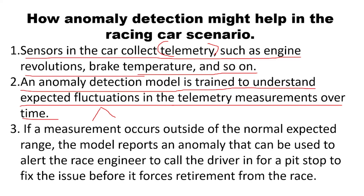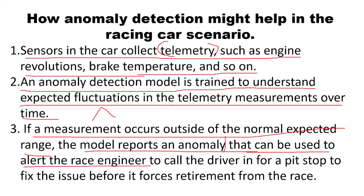Small fluctuations can be negligible, but very major fluctuations cannot be neglected. If a measurement occurs outside of the normal expected range — if the fluctuation exceeds the normal range — then the model immediately reports an anomaly, an error that can be used to alert the race engineer to call the driver for a pit stop to fix the issue before it forces retirement from the race.